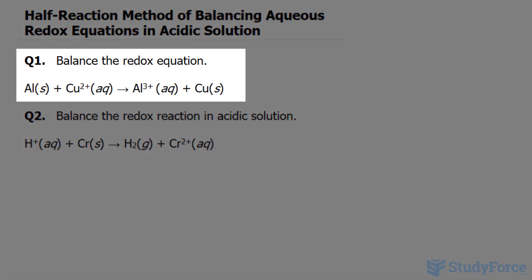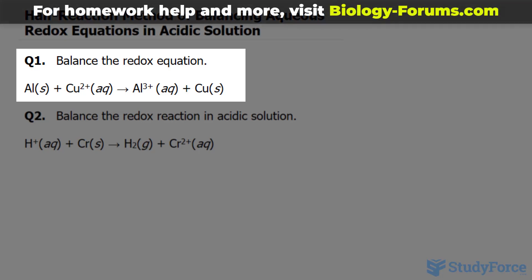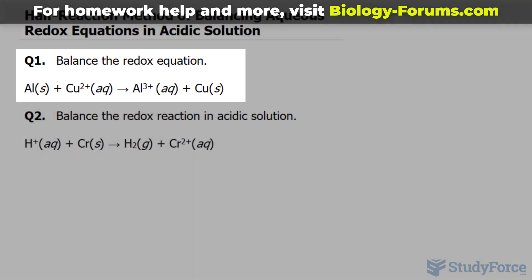Balance the redox equation shown underneath. We have aluminum in its solid state plus copper 2 plus, and this forms aluminum 3 plus in addition to solid copper.